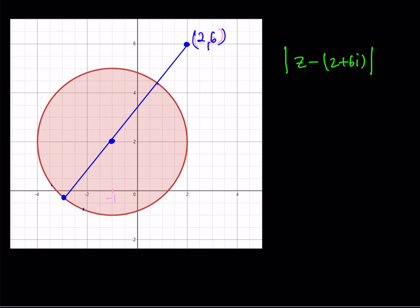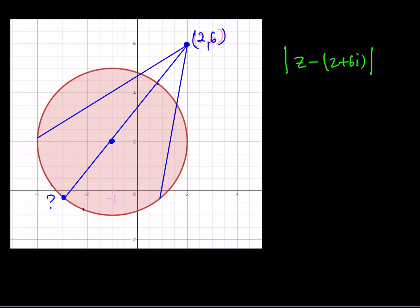What is the distance between (2, 6) and that farthest point on the circle? We don't directly know the coordinates of that point, but here's the key: the segment must go through the center. If you pick any other segment that doesn't go through the center, that's not going to be the maximum distance. We need to go right through the center to get the longest length.